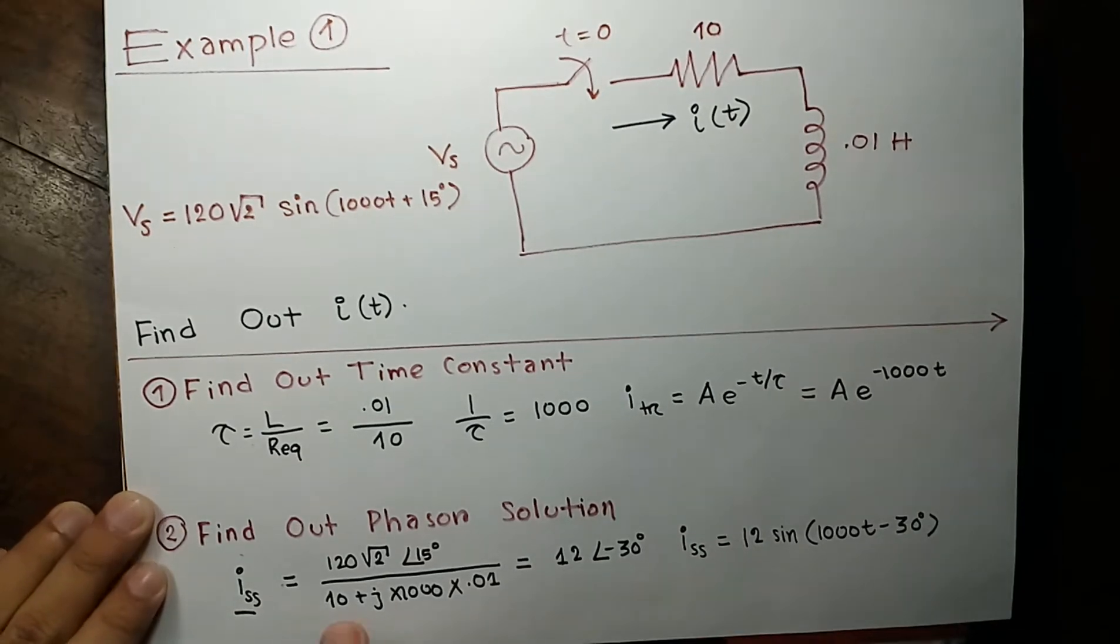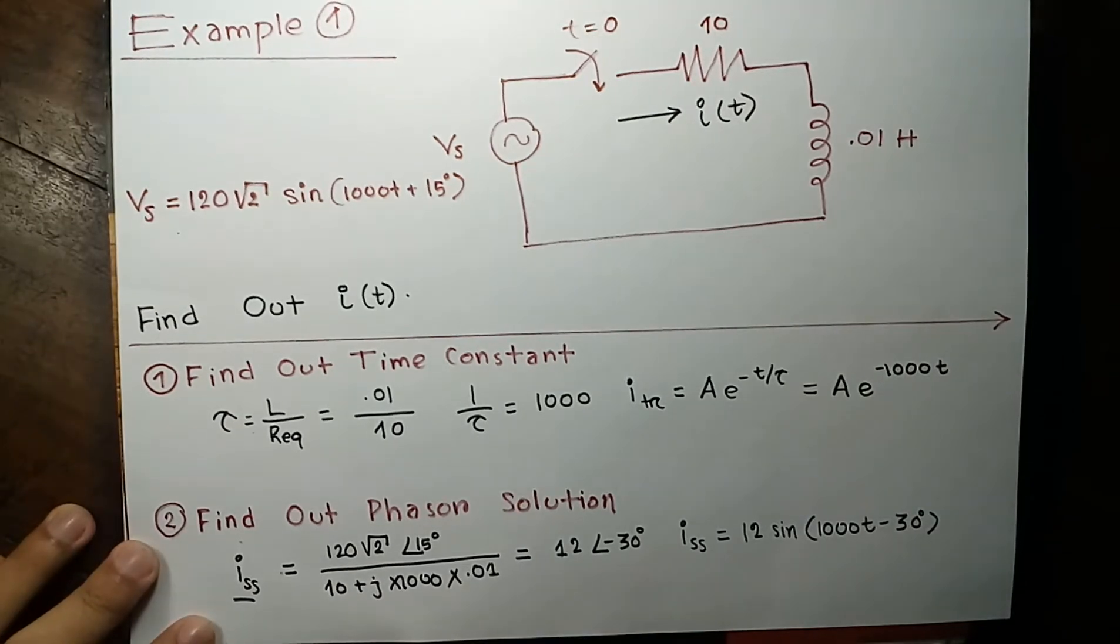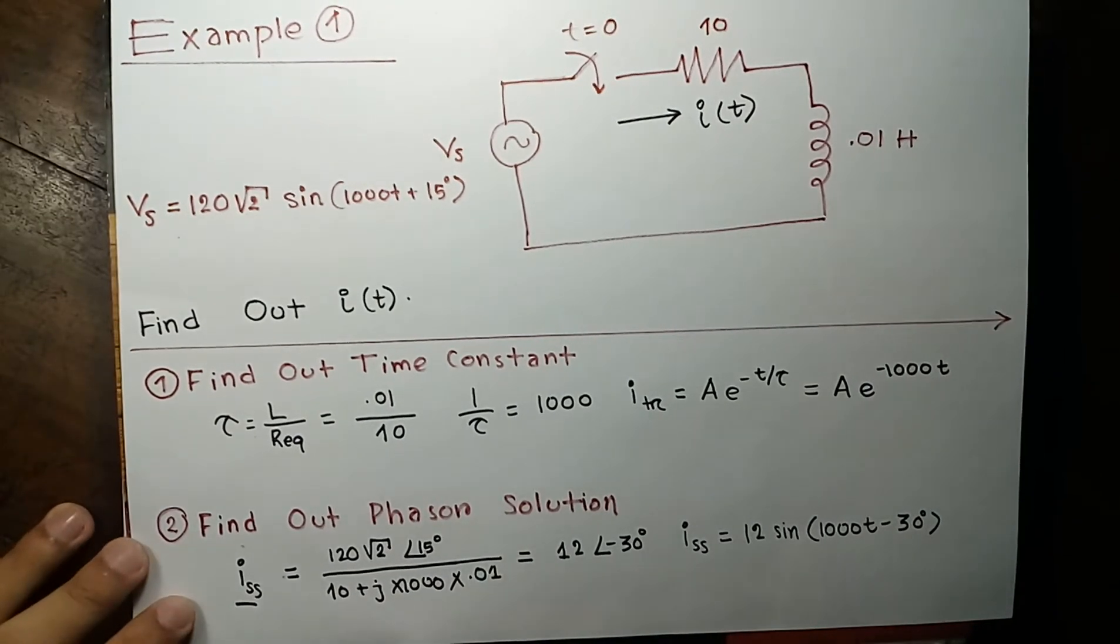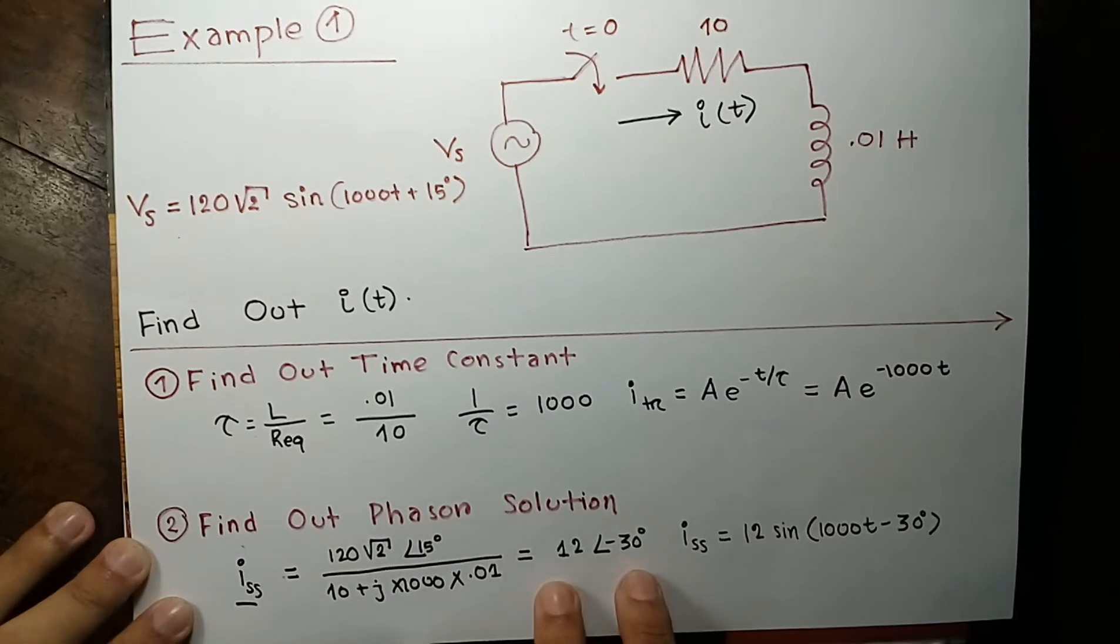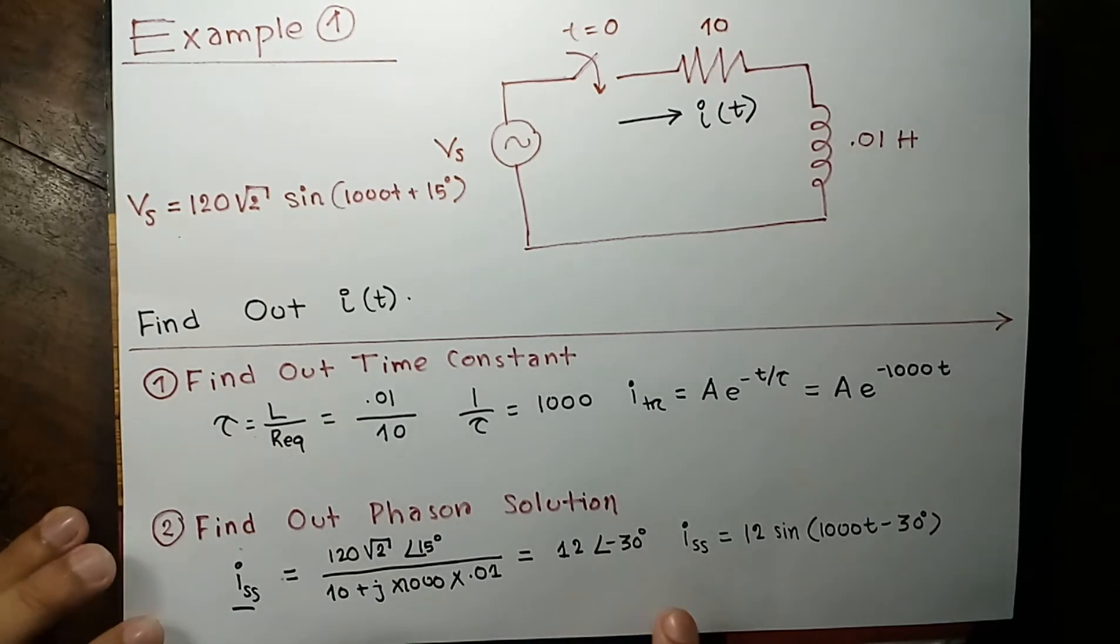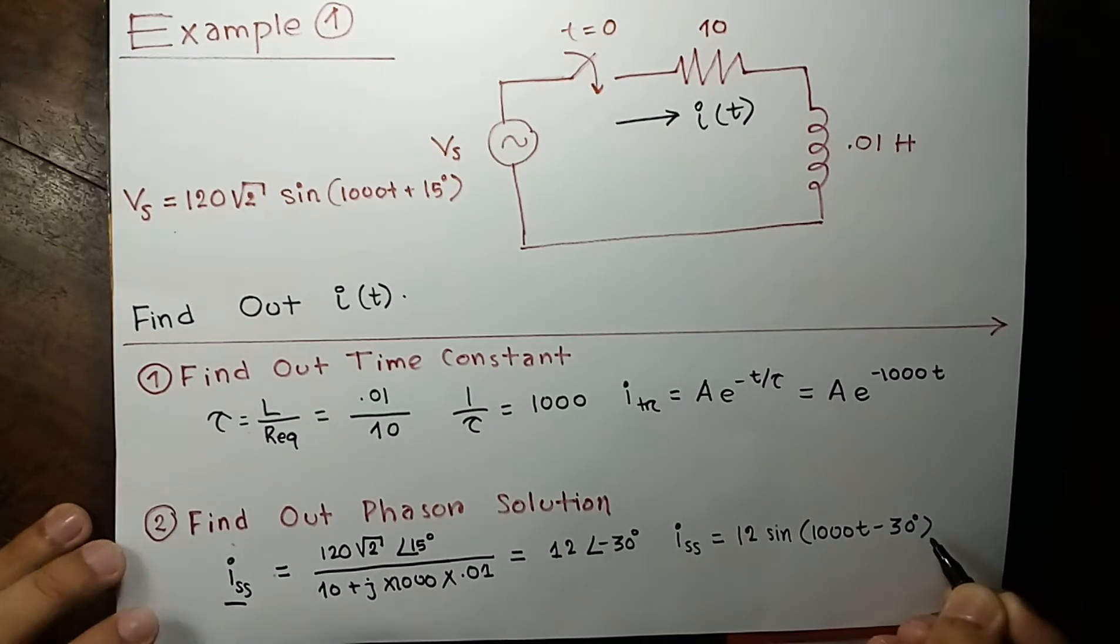And we have to find out our steady state solution by doing phasor. To solve this solution we have to take all these elements into frequency domain. And that becomes 120 root 2 angle of 15 over 10 plus j omega L. And the answer turns out to be 12 angle of negative 30 degree. And our steady state solution comes out 12 sine of 1000 t minus 30 degree.